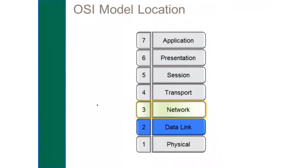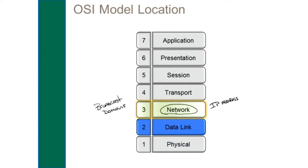We're going to get into the idea of routing. Routing operates at the network layer, because at the network layer we define what we call broadcast domains. We gave each broadcast domain a logical name described with an IP address or IP network address. In order for communications to occur from one broadcast domain to another, we have to create routes so that layer 3 devices — routers — know how to forward traffic.